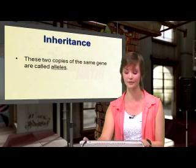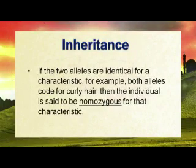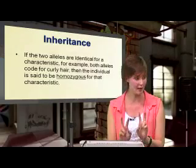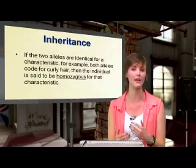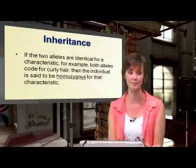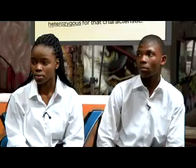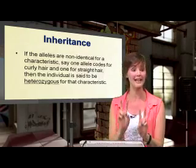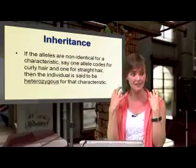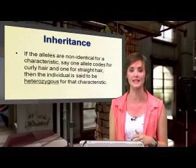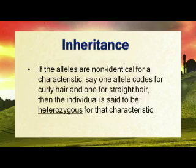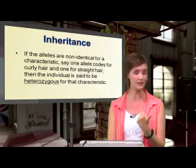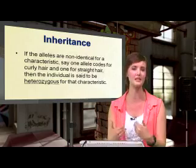If two alleles are identical for a characteristic — for example, the chromosome from your mum and the chromosome from your dad both say you must have curly hair — then we say they are homozygous for that characteristic. You are homozygous for having curly hair, you are a purebred for curly hair. If your mum's chromosome says you must have curly hair but your dad's chromosome says you must have straight hair, the alleles are different — they code for the same characteristic, hair, but they are different. Then we say you are a hybrid, or heterozygous, for that characteristic. Homozygous means identical; heterozygous means two different alleles for the same characteristic.